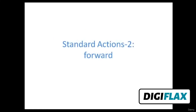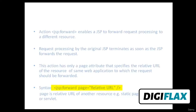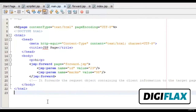In this video tutorial, we are going to learn about the jsp:forward standard action. The jsp:forward action enables a JSP to forward request processing to a different resource. Request processing by the original JSP terminates as soon as the JSP forwards the request. This action has only a page attribute that specifies the relative URL of the resource in the same web application to which the request should be forwarded. The relative URL can be a static page, a JSP page, or a servlet.